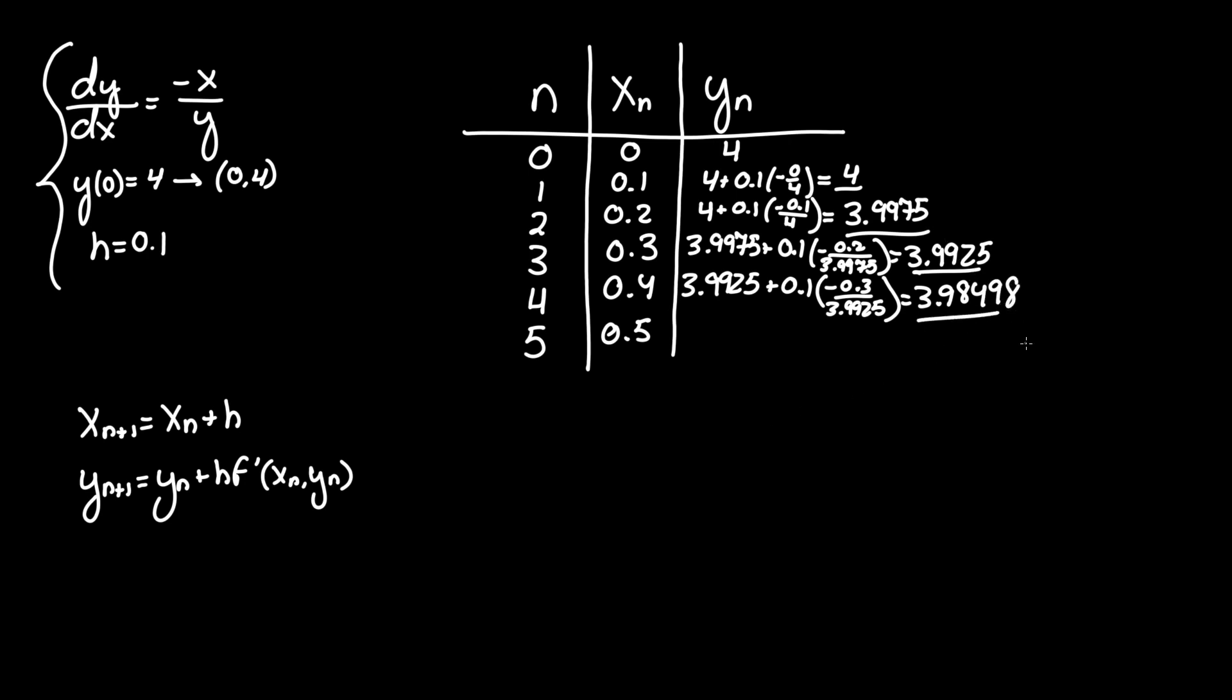So you can see it's starting to decrease a little more each time, and for the fifth and final iteration we take our value of y of 4, 3.98498, plus 0.1 times negative 0.4 over the previous value 3.98498, and this will give us our final y of 5 equal to 3.97495.